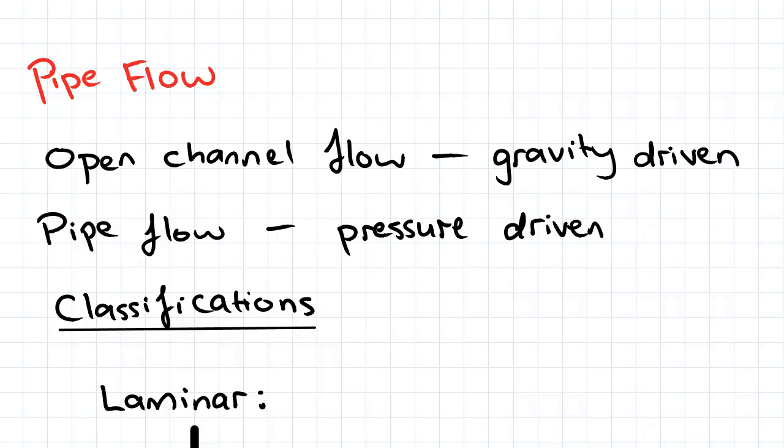Now for open channel flow we found out that the driving force of the flow was gravity and there was no pressure change along the flow. In pipe flow, because there is no free surface, the main driving force is pressure. So we're able to apply a pressure gradient to the pipe flow and so we'll be dealing more with pressure gradients.